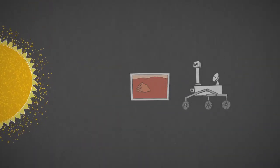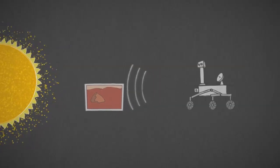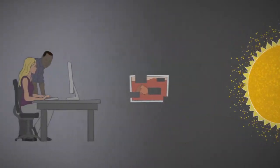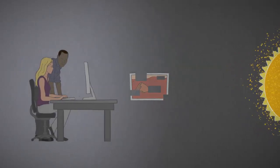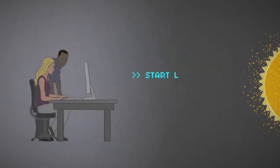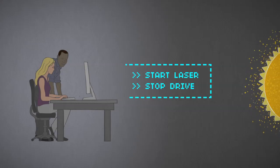If our spacecraft send back signals, charged particles from the Sun could interfere, causing gaps in the data that reach us. That's not a big deal. If something's missing, it can always be re-sent later. But no way do we want to lose data when we send up commands.